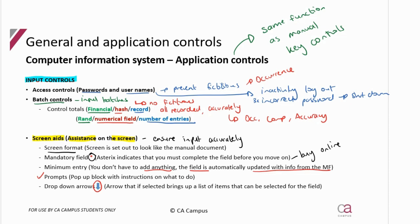Screen aids ensure the accurate input of your data — it's formatted, there's mandatory field. Mandatory field can also ensure completeness because it makes sure you don't miss anything; everything that must be in is in there. Minimum entry, prompts, and drop-down arrows — all of these are at the input stage, as you can see when I'm putting data into the invoice so that once it's ready, the invoice will be processed by the system. Our next set of application controls are program checks.